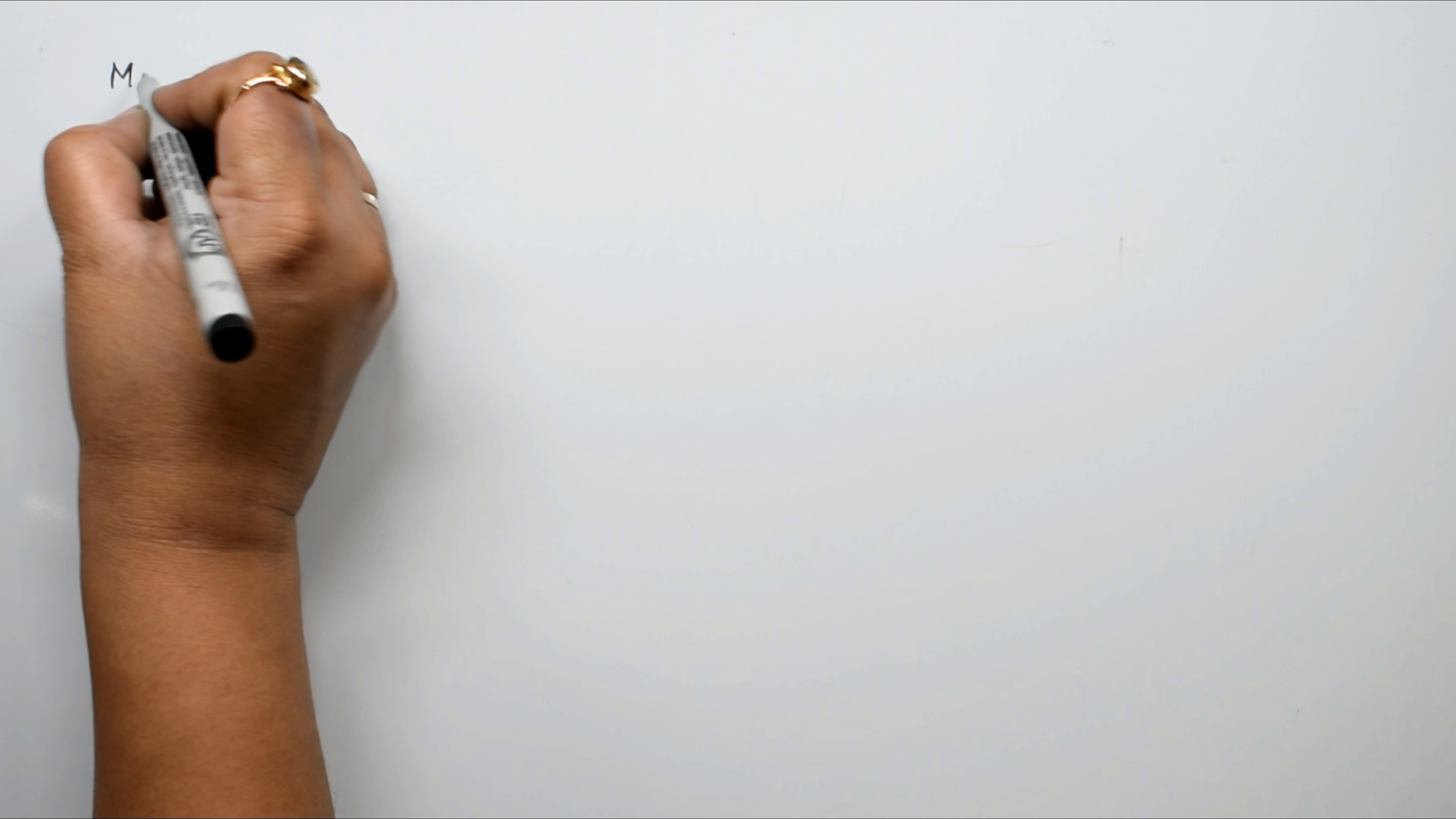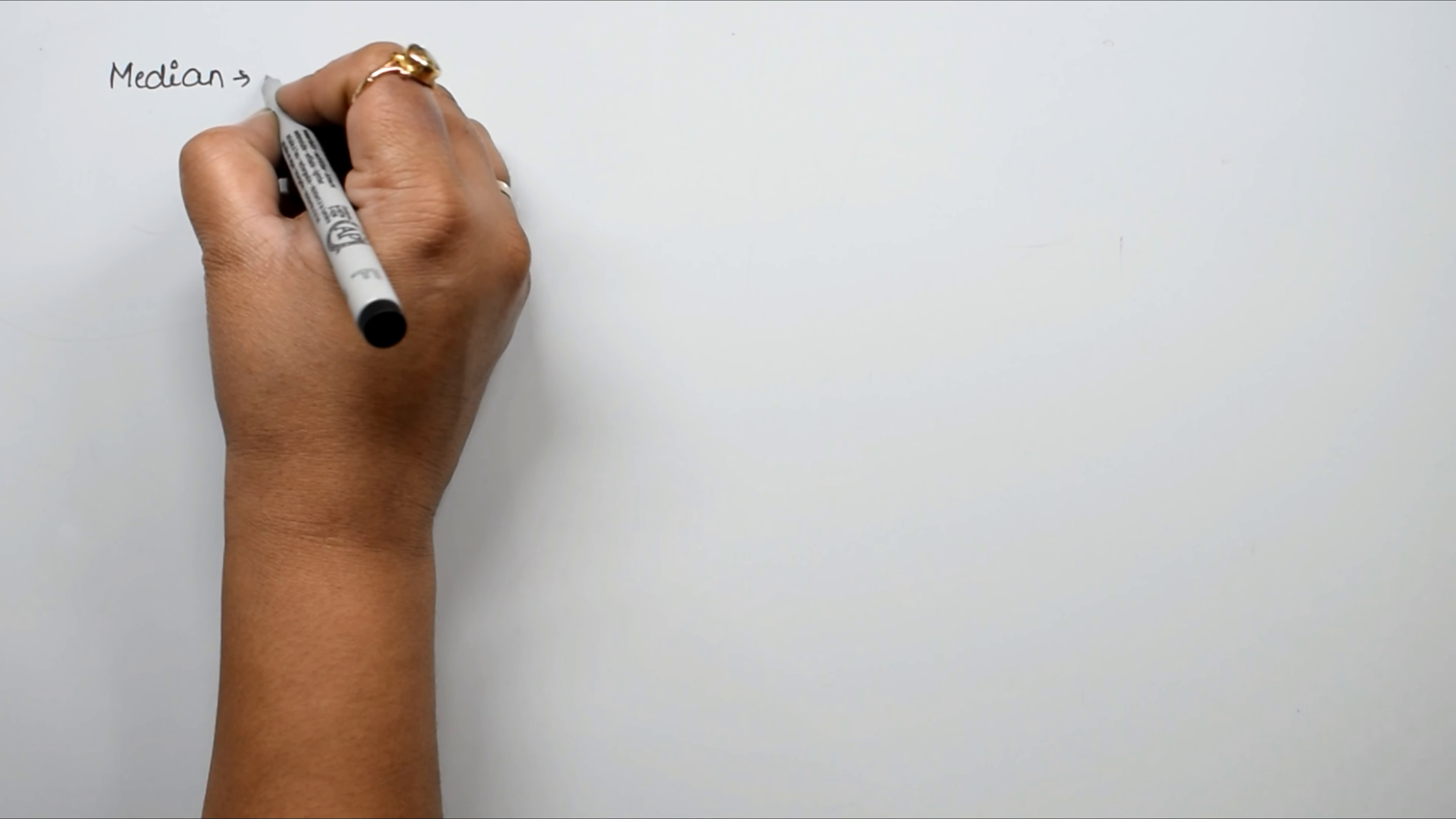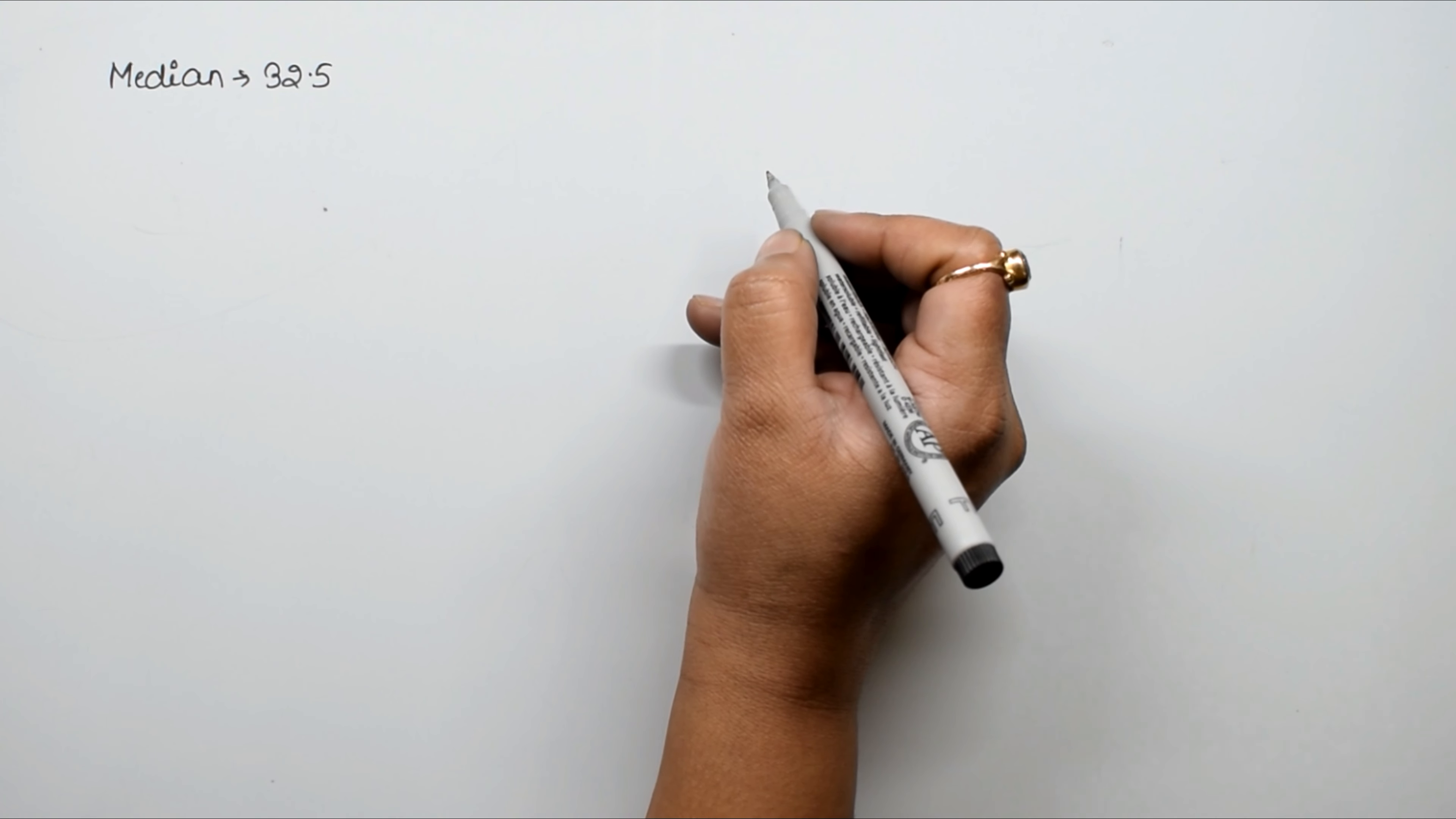Question number 10: If the median of the following frequency distribution is 32.5, find the values of F1 and F2.